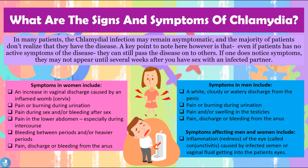Some of the symptoms in women include an increase in vaginal discharge caused by the inflamed cervix, pain or burning during urination, pain during sex and/or bleeding after sex, pain in the lower part of the abdomen especially during intercourse, bleeding between periods and/or having heavier periods, and pain, discharge, or bleeding from the anus.